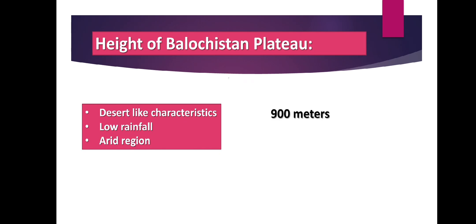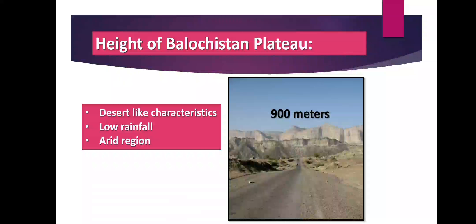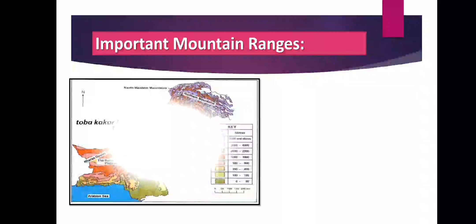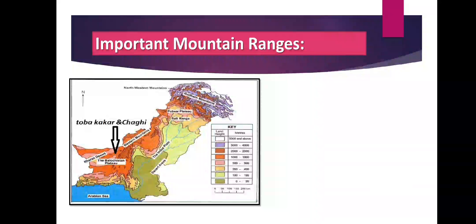The height of Balochistan Plateau is 900 meters. Balochistan Plateau is an arid region, meaning it has insufficient or very low rainfall. The western part of the plateau is dry due to shortage of rainfall. This region has a lack of vegetation, and the climate of this region is very dry and hot.